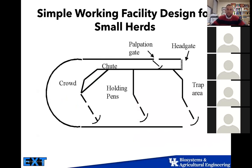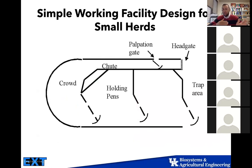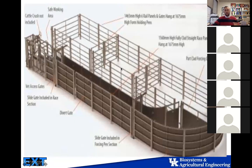The simplest working facility design for smaller herds is just where you have your holding pens leading up to your crowding tub, then working animals down your alley to your head gate. We're going to use a modification of this for our cattle handling barn.